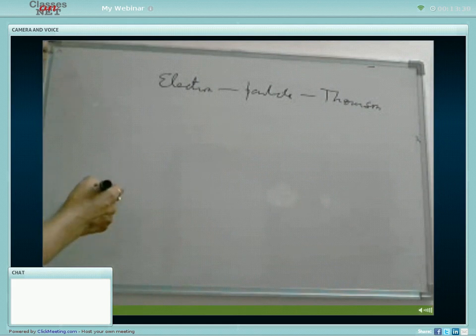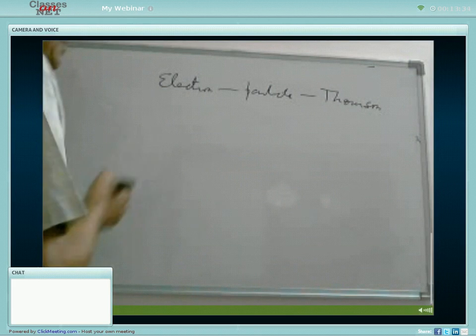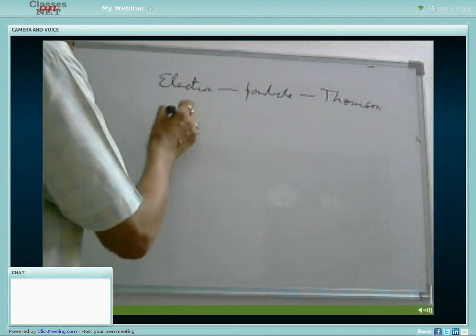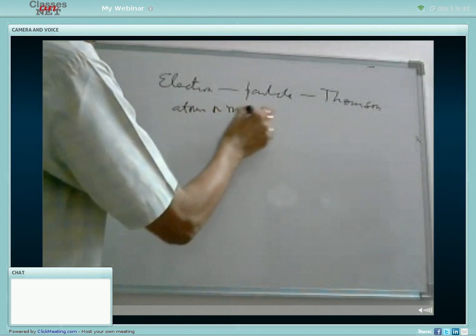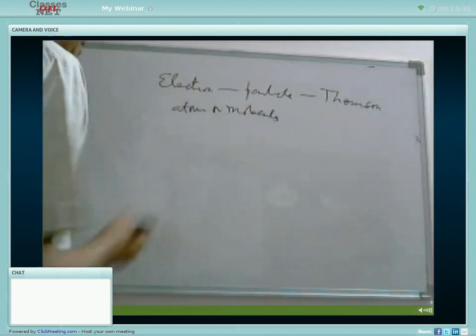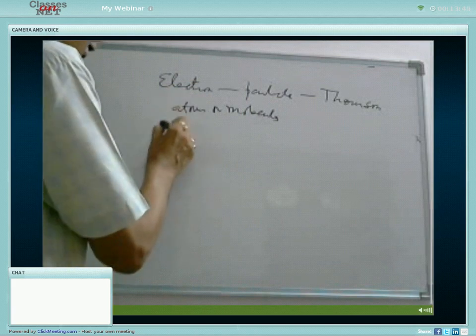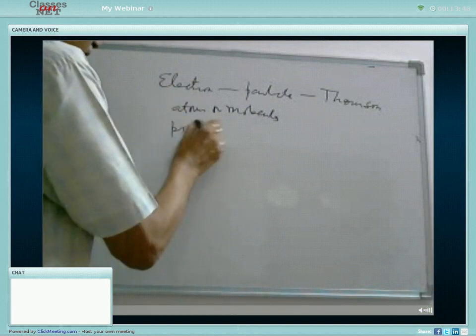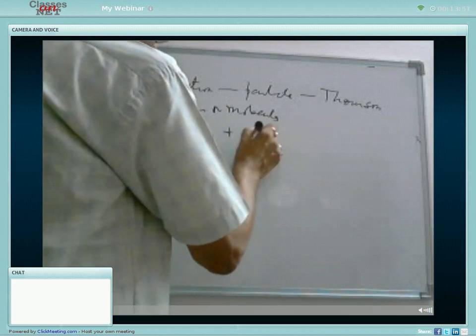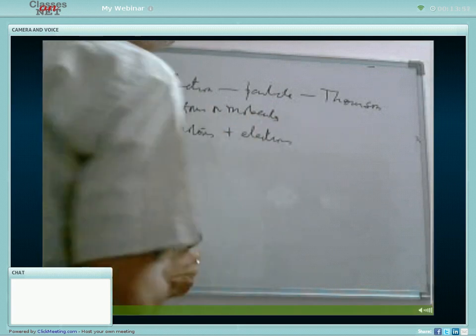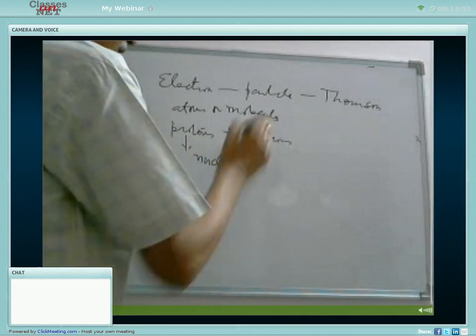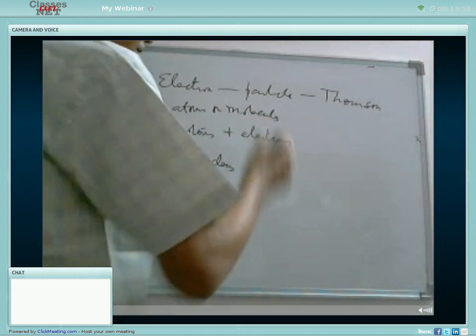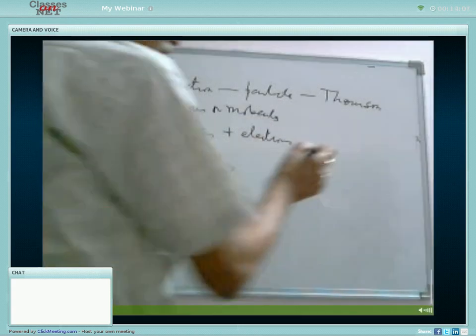He found that all the materials, they consist of small particles known as atoms or molecules, and these atoms, they further contain small particles known as protons and electrons. Protons lie in the nucleus of the atom and electrons revolve around the nucleus in different orbits.